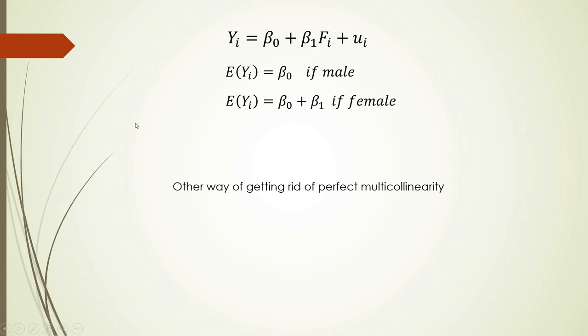Other way of getting rid of perfect multicollinearity is that we leave out the constant from our model. For example, here we don't have beta zero anymore. We have beta one for females and beta two for males. So in that way we also don't have any multicollinearity in our model.